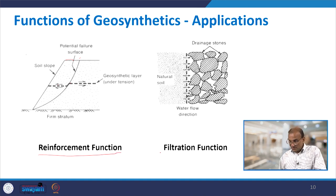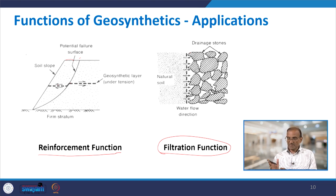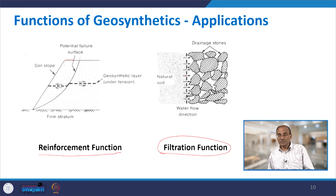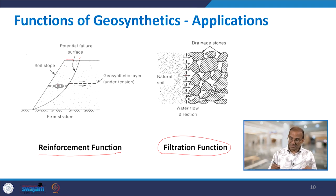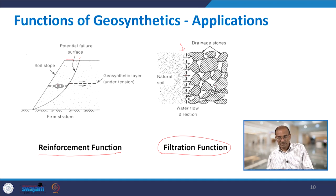Another use of geotextiles is the filtration function, where you have drainage stones on one side and natural soil on the other. A geosynthetic functions as a filter, allowing adequate flow of fluids across its plane while preventing migration of soil particles along with fluid flow. Without this perpendicular geosynthetic layer, water flow would carry away soil particles, causing erosion and potentially damaging the drainage stones.